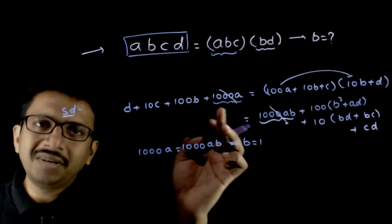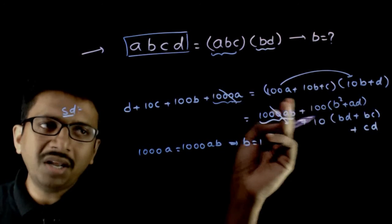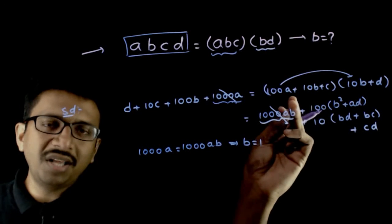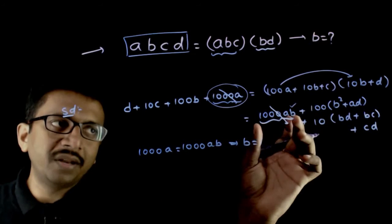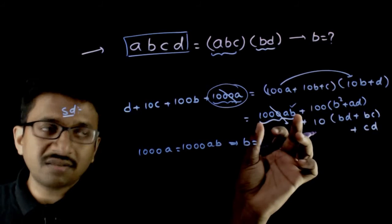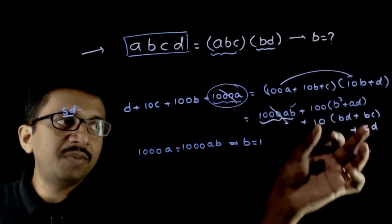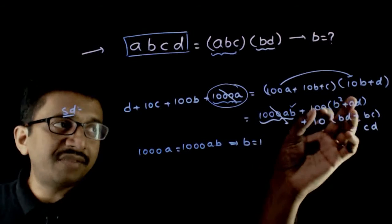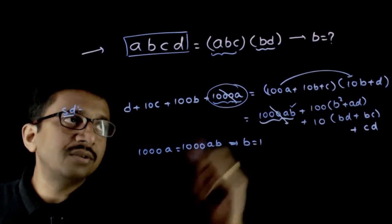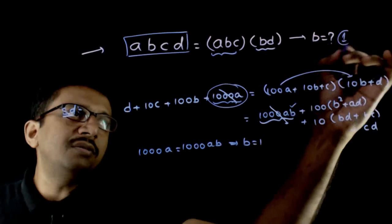You do not need to go further because if B is not equal to 1, here you have A in the 1000 place. If B is not equal to 1, this 1000 place will get higher and this cannot be affected by the other digits. So B has to be equal to 1.